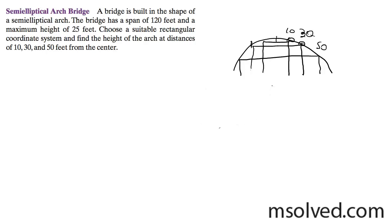And the entire width is 120, but that means from the center it's 60 feet. So our equation is going to be x squared over 60 squared plus y squared over 25 squared, in the sense of being x squared over 3600 plus y squared over 625 is equal to 1.